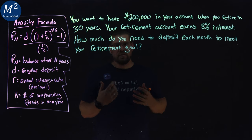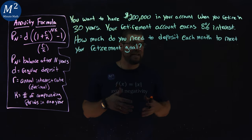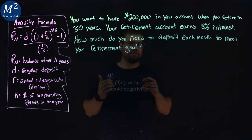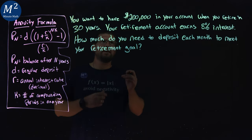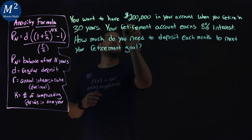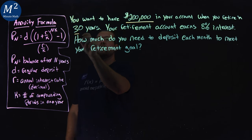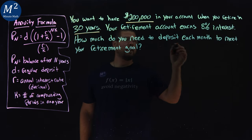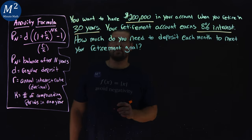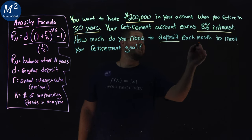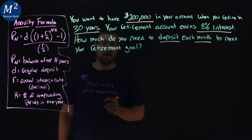We're not pulling money out of the account. We're only putting money in at set intervals over a given period of time, and that account grows. So let's get our key spots here. We want to have $200,000 in an account when you retire in 30 years. Our account earns 8% interest. Not bad.